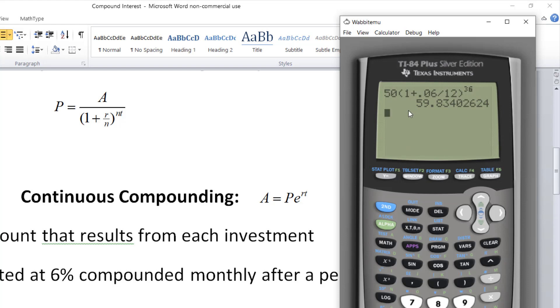The future value, or the amount that is generated by depositing $50 for three years at 6% compounded monthly, is 59.83. Round off to two places since we're dealing with money. $59.83.